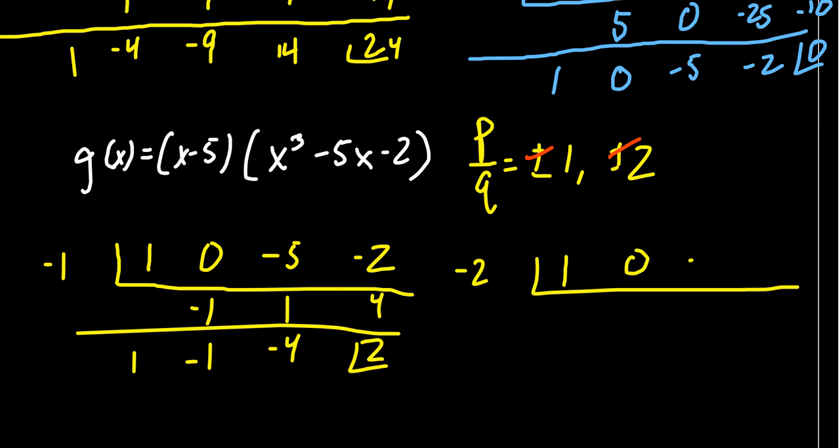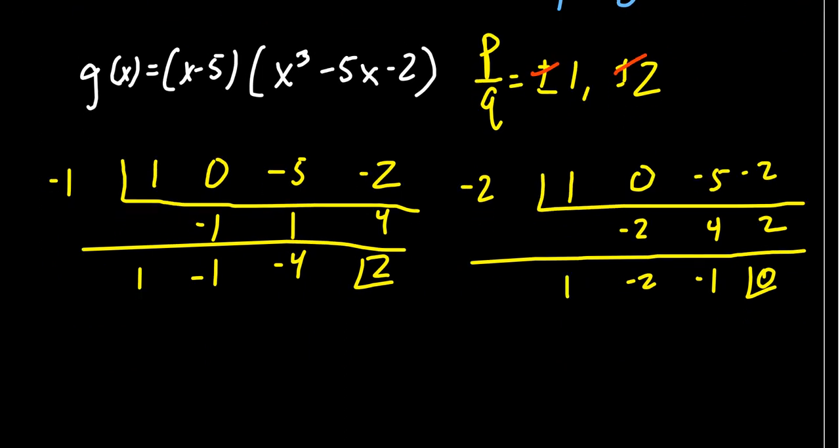1, 0, -5, -2. Again, there's a little bit of guesswork here, but that's OK. Bring down the 1. 1 times -2 is -2 plus 0 is -2 times -2 is positive 4 minus 5 is -1 times -2 is a positive 2. And there we go. We found our remainder. That is, we found the remainder to be 0.